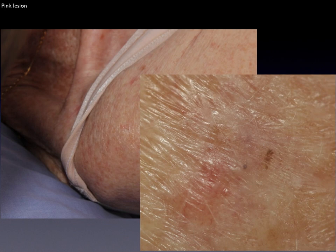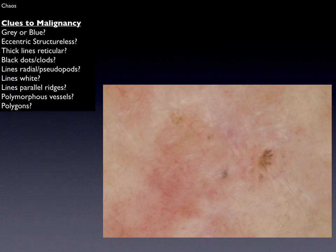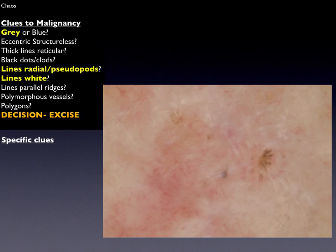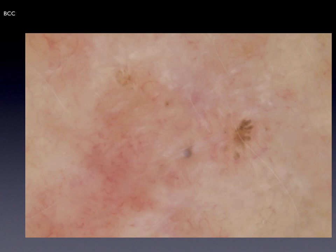This subtle lesion on the shoulder is pink, and we cannot recognize it as one of the five common benign lesions, so we apply pattern analysis — in this case chaos and clues. It is asymmetrical, and we can see clues to malignancy of gray and blue, as well as lines radial segmental and polarizing-specific white lines at right angles to each other but not crossing. We make the decision to excise. Then we look for specific clues: absent lines reticular and lines radial converging and extending from a hypopigmented area — these point specifically to basal cell carcinoma.